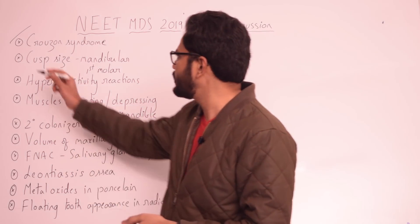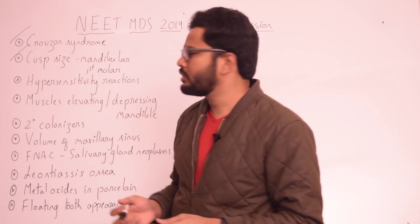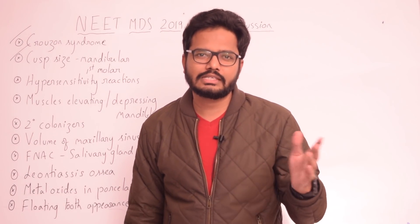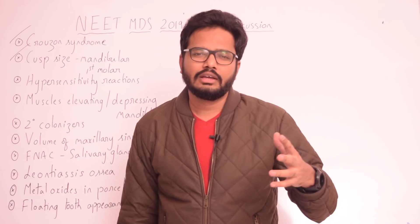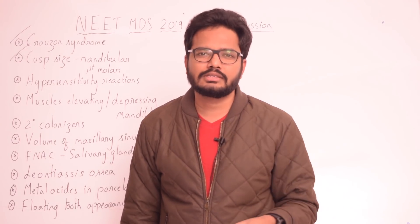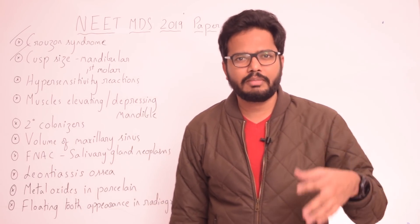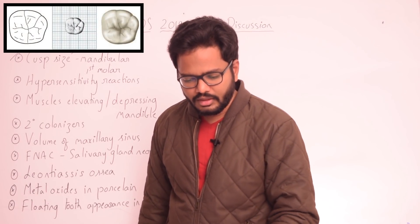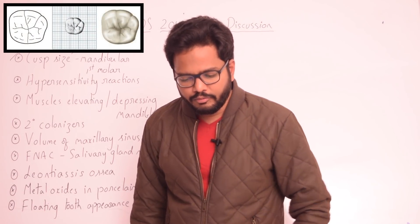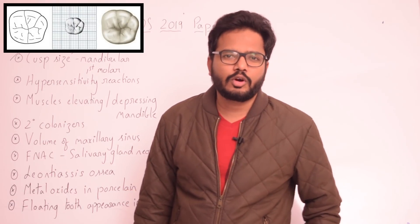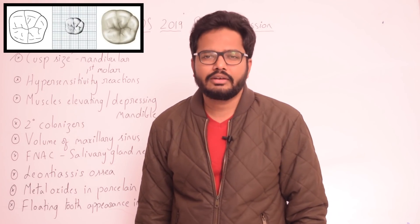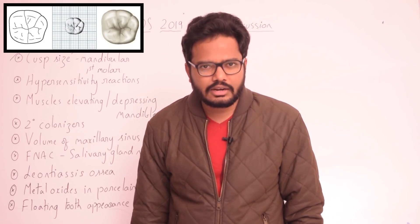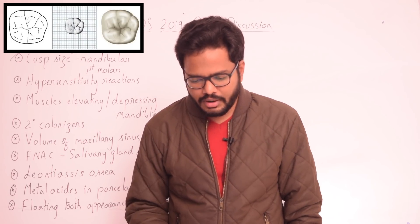Now coming to cusp size in the mandibular first molar. We discussed the sequence and range of the different cusps and their sizes in both maxillary and mandibular first molars. Looking at the image, the largest cusp is the mesiobuccal, followed by mesiolingual, then distolingual, then distobuccal, and the smallest is the distal cusp.